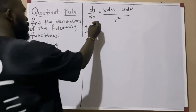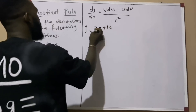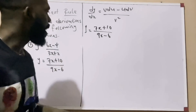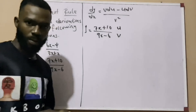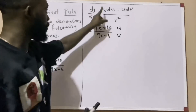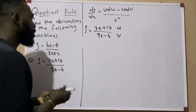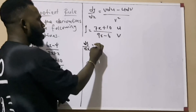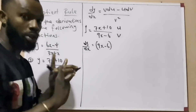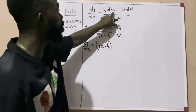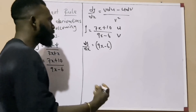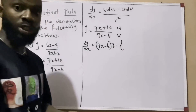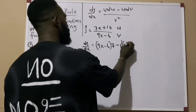Question two states: y equals (7x plus 7) over (9x minus 6). Again, u is the numerator and v is the denominator. Once we know our u and v, we apply the formula: v·du minus u·dv over v squared. So dy/dx equals — my v is 9x minus 6, hold it, then differentiate u. My u is 7x plus 7; differentiating that gives 7.